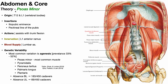The final muscle is the psoas minor. We discussed the quadratus lumborum emerging from beneath the lateral arcuate ligament. The psoas minor — this very thin muscle — emerges from beneath the medial arcuate ligament. The psoas minor is superficial or anterior to the psoas major, which is much bigger. The psoas minor is a very thin muscle, and it pretty quickly terminates into a very skinny tendon that does not exit the pelvic cavity — it actually stays within.